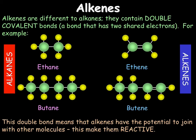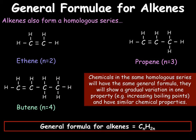This double bond means that alkenes have the potential to join with other molecules, making them much more reactive. Just like with alkanes, we can give alkenes a general formula. Their general formula is CnH2n. We can't have methene because we need two carbons to form a double bond. If we take ethene — the smallest of the alkenes — n equals 2, so 2n is 2 times 2, which is 4. So C2H4, which is our formula for ethene. You need to be able to work out both formulas for alkenes and alkanes.